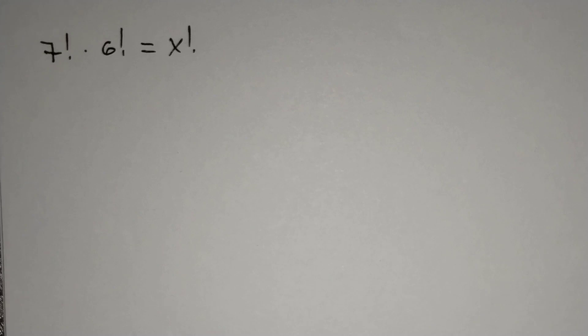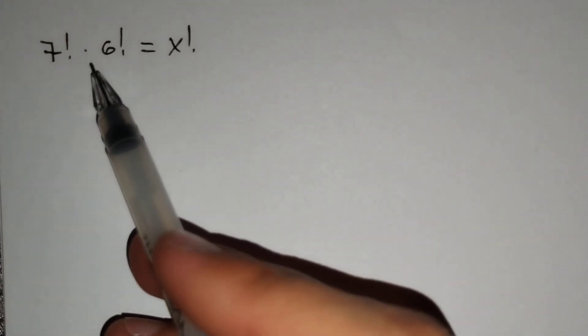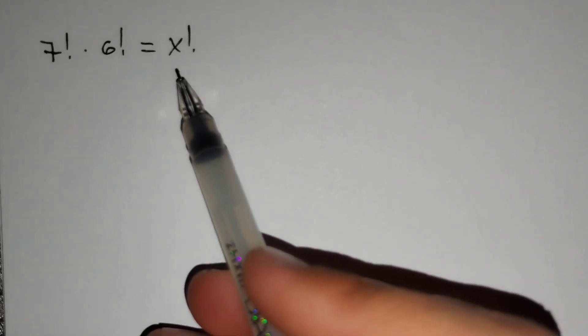Hi everyone, in this video we will solve this problem: 7 factorial times 6 factorial equals x factorial. How should we solve this problem?